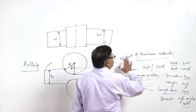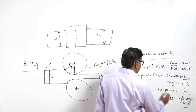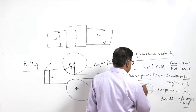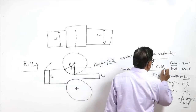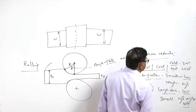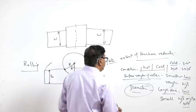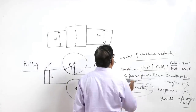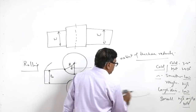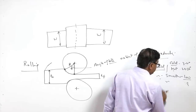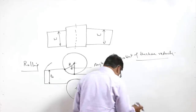The angle of bite determines the extent of reduction, which in turn is influenced by the diameter of the rollers, surface roughness of the rollers, and the condition or temperature of the metal in which rolling is being carried out. These are the factors governing the angle of bite, which eventually determines the extent of reduction during rolling.